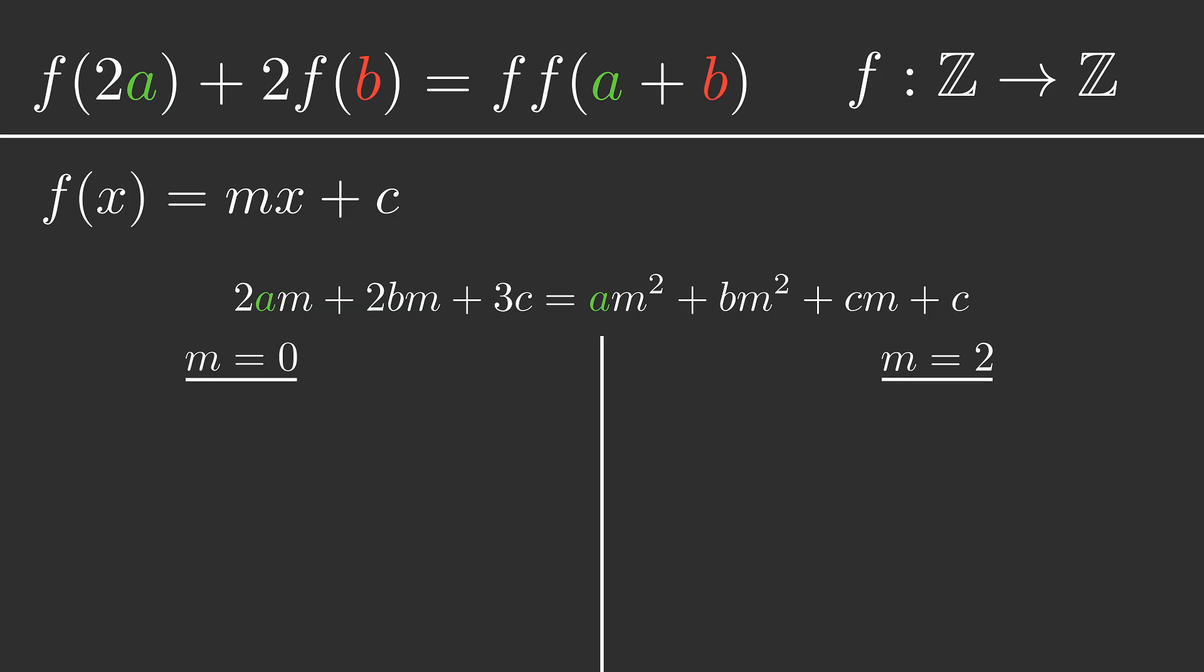Firstly, when m equals 0, pretty much all the terms will cancel out, just giving 0, and this leaves us with only 3c equals c. So when is this true? Well if a number is equal to 3 times itself, the only number that works is 0, so c must be 0.